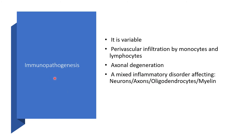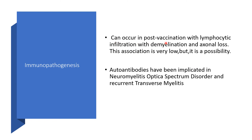Now, the immunopathogenesis of transverse myelitis is variable. We might find perivascular infiltration by monocytes and lymphocytes, axonal degeneration, or a mixed inflammatory disorder affecting neurons, axons, oligodendrocytes, or myelin. It can also occur post-vaccination with lymphocytic infiltration, demyelination, and axonal loss. This association is very low, but it is a possibility.